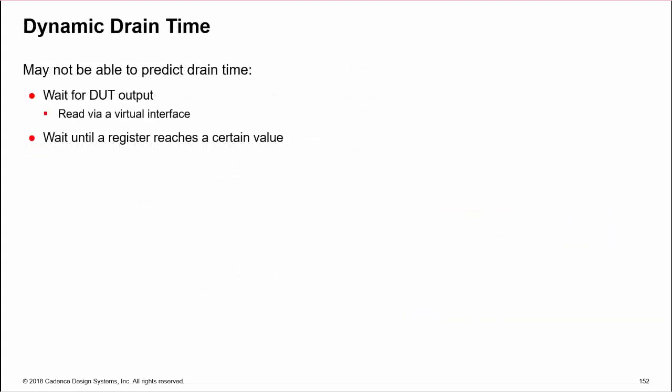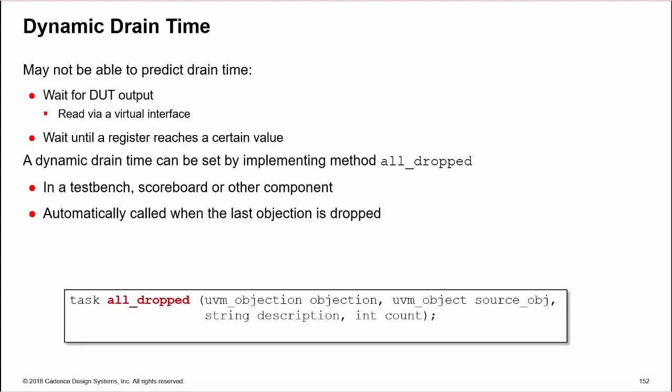But we may not be able to predict an explicit delay. We may need to wait for a specific DUT output or for a register to reach a certain value. A dynamic drain time can be set by implementing the task all_dropped in a test bench or other UVM component. This task will be automatically executed to completion when the last objection is dropped and we can implement our dynamic drain time in this task.